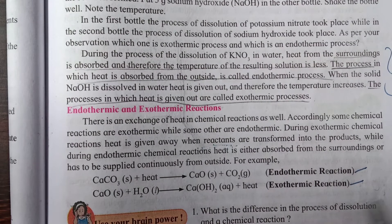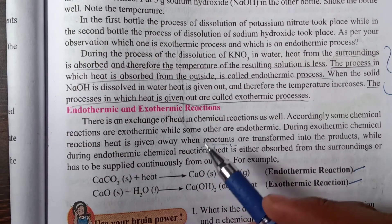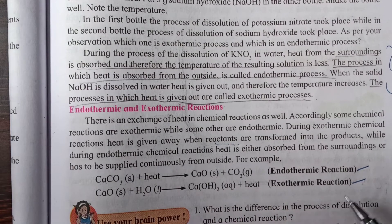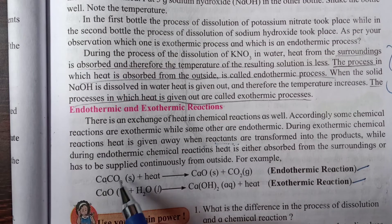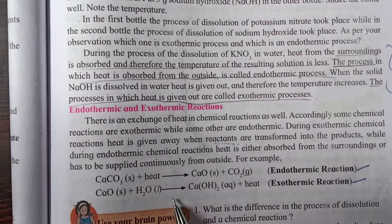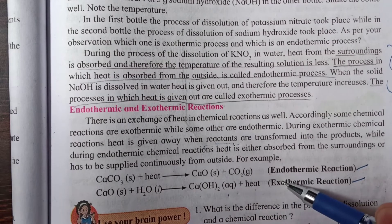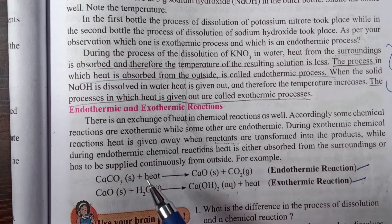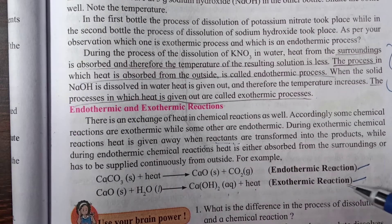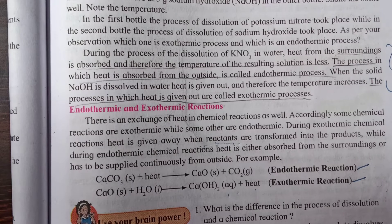For an endothermic reaction: CaCO3 (solid) + heat → CaO + CO2. Heat is absorbed by the reactant, making it endothermic. For an exothermic reaction: CaO + H2O → Ca(OH)2 (aqueous) + heat. Here heat appears on the product side. Remember: if heat is on the reactant side or above the arrow, it is endothermic; if heat is on the product side, it is exothermic.